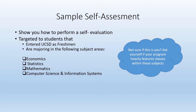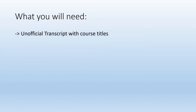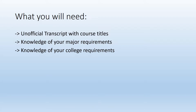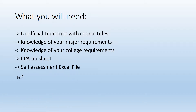Just as a word of advice, this is not a quarter-by-quarter plan, which means that we will not be telling you exactly what you need to take each single quarter. What you're going to need: an unofficial transcript with your course titles, a relative knowledge of your major requirements and your college requirements, the CPA tip sheet which you can find online on our website, and the self-assessment Excel file which can be found in the URL below.